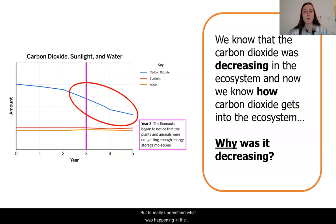But to really understand what was happening in the biodome, we shifted our question to what exactly is causing the carbon dioxide to decrease. Throughout the last few lessons, we've been looking into how carbon dioxide even gets into an ecosystem in the first place.